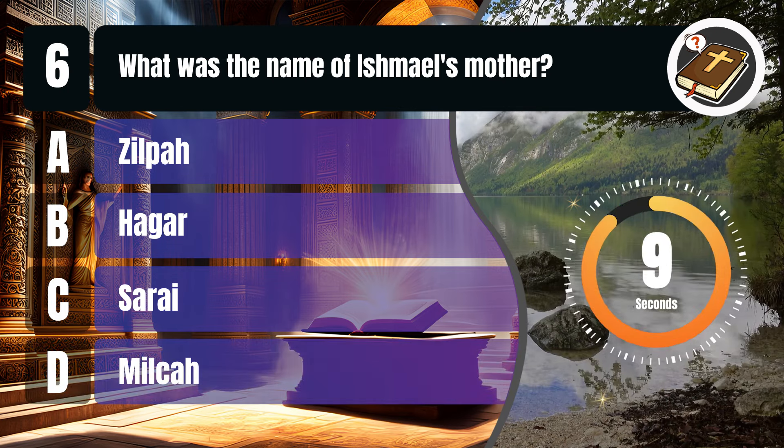That's B. Hagar. Hagar, Sarah's maidservant, became Ishmael's mother through Abraham, fulfilling God's promise of a son. Genesis, chapter 16, verse 15. Ishmael's birth highlights the complexities of human relationships and the consequences of attempting to fulfill divine promises through human effort, illustrating themes of faith and patience in God's plan.